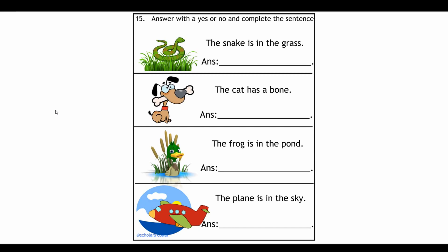This is the last and final worksheet. You're going to look at the picture and answer the question yes or no, and then complete the sentence. This is a very important worksheet for comprehension purposes and for vocabulary, which improves if your child is learning to read sentences and then able to answer the question. I have a couple of pictures here on the side. The snake is in the grass and you're answering with a yes or no. You just write yes, comma, the snake is in the grass. Your child can just copy from the sentence up here. Next is the cat has a bone. No, comma, the dog has a bone. Next, the frog is in the pond. No, comma, the duck is in the pond. Next, the plane is in the sky. Yes, the plane is in the sky.